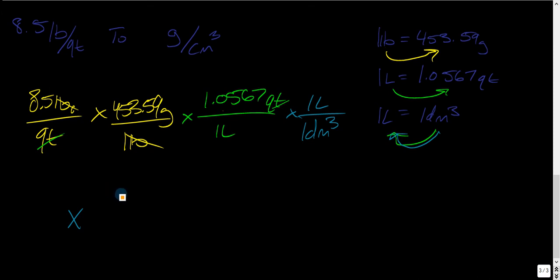We use the conversion factor that we just derived up there, where we put our box around. So 1 decimeter cubed is equal to 10 centimeters cubed. That's it guys, thanks for watching.